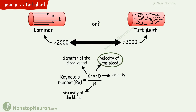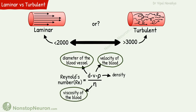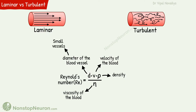From the equation, we can see that higher velocity of the blood flow and larger diameter of the blood vessel tend to increase Reynolds number and thereby cause turbulence. Whereas viscosity of the blood tends to decrease Reynolds number and thereby tends to maintain laminar blood flow. This explains the type of blood flow in different conditions. For example, in small vessels, flow is almost always laminar due to smaller diameter.